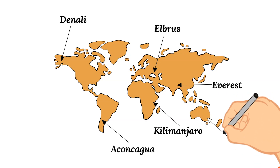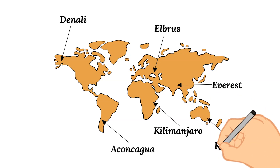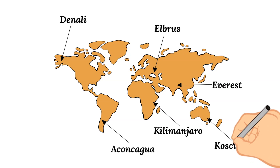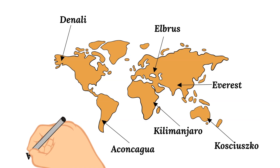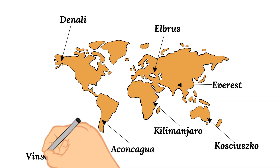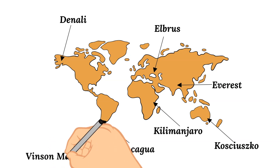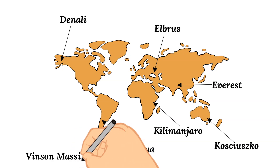There is Mount Kosciusko, found in Australia — specifically in New South Wales — and this mountain reaches 7,310 feet tall. And last but not least is Vinson Massif, located in Antarctica near the South Pole, reaching a height of 16,066 feet.